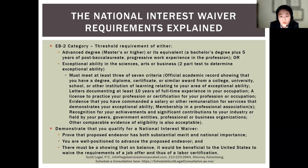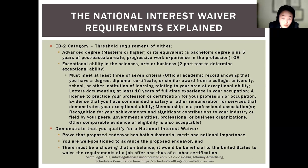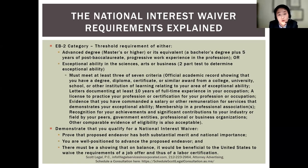Once you've met the EB-2 threshold, the next step is proving you qualify for a National Interest Waiver, which means the government will exempt the ordinary labor certification requirement. Your work must meet three prongs set out by the case Matter of Dhanasar. The first is that your proposed endeavor needs to have substantial merit and national importance — demonstrable in a variety of fields including arts, sciences, business, and culture.